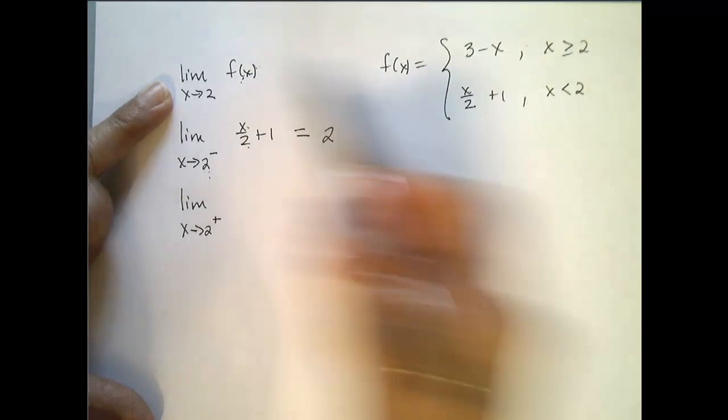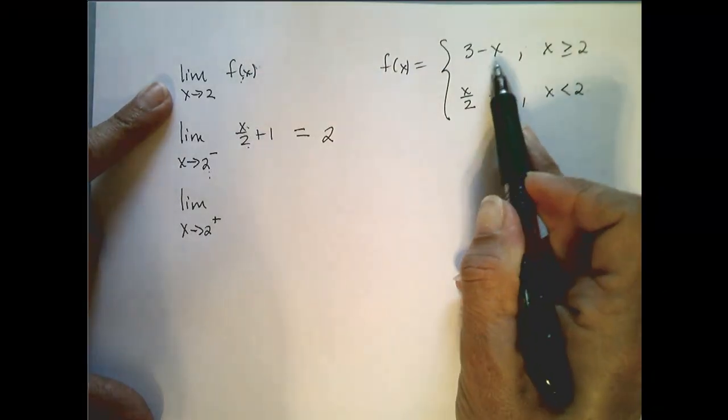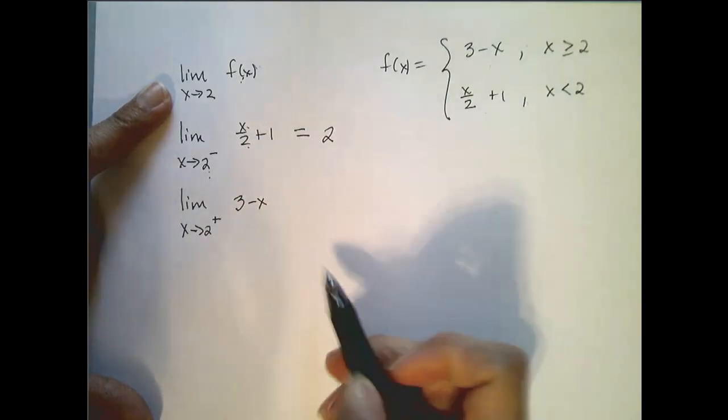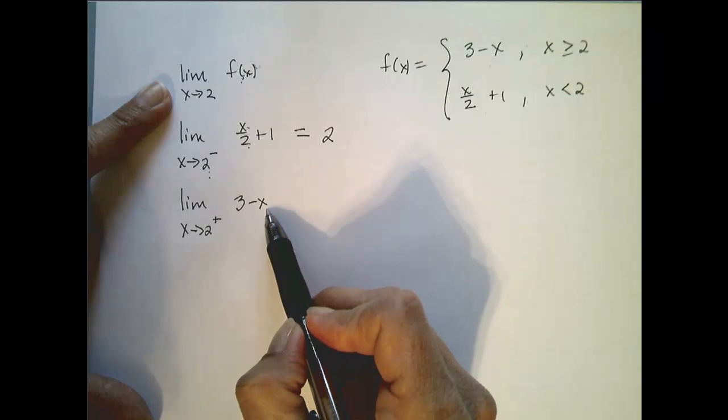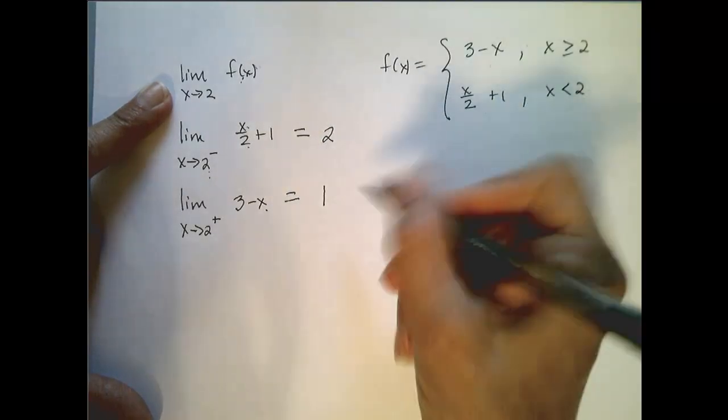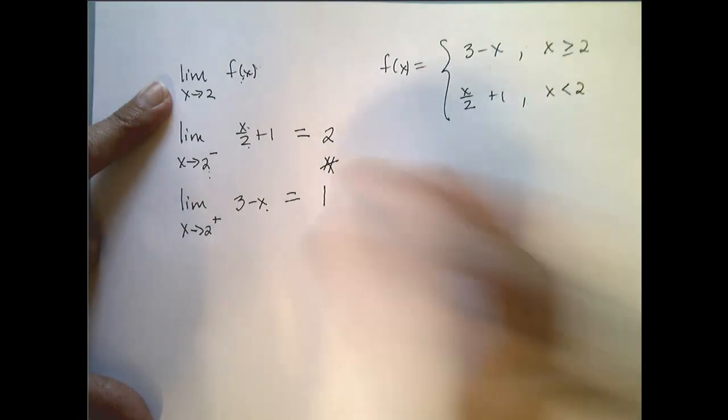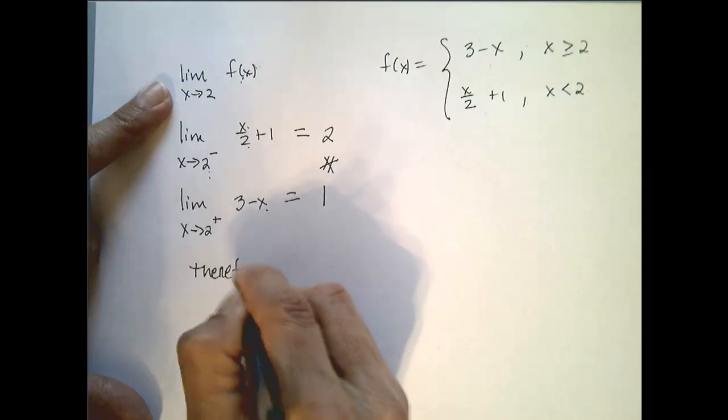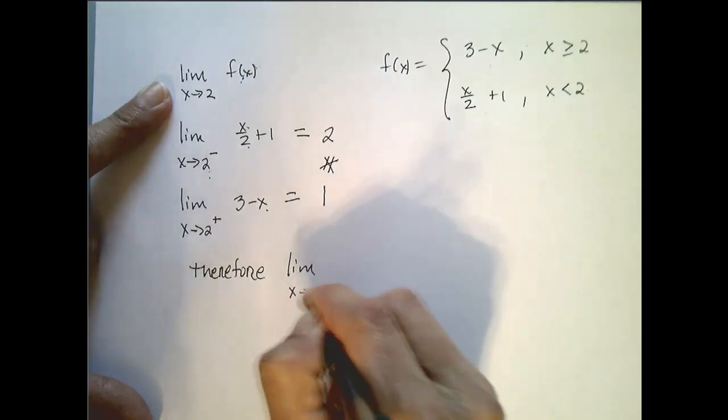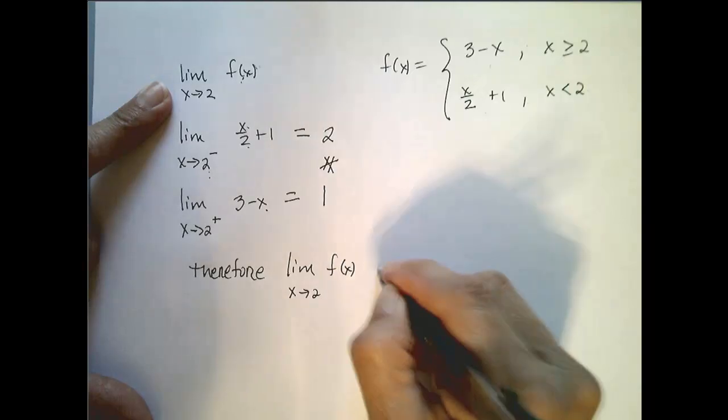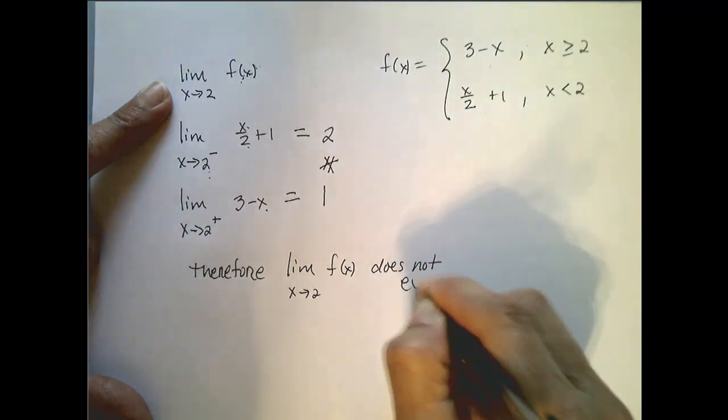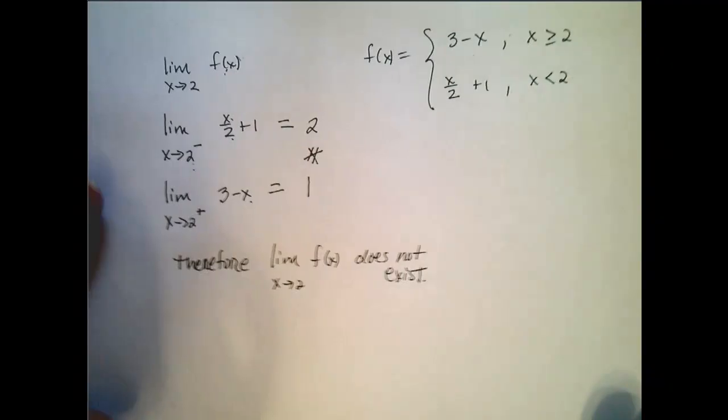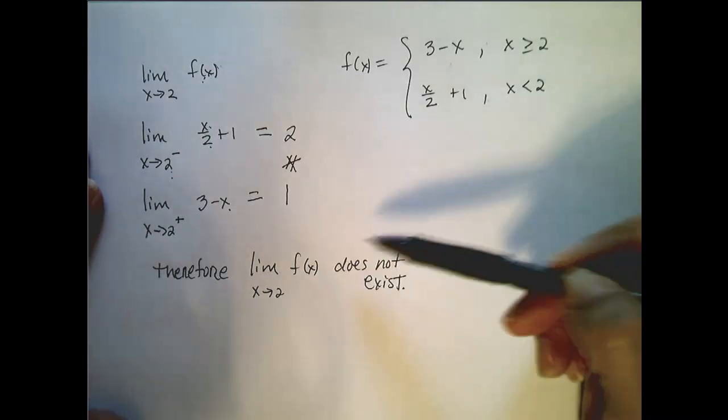Now, the limit as x approaches 2 from the right of f(x)—well, I now plug in what f is, how f is defined to the right of 2, and that is 3 minus x. If I plug 2 in here I get 1. And I notice my limits are not equal, therefore the limit as x approaches 2 of f(x) does not exist. Now let's see if we can also explore this limit graphically.